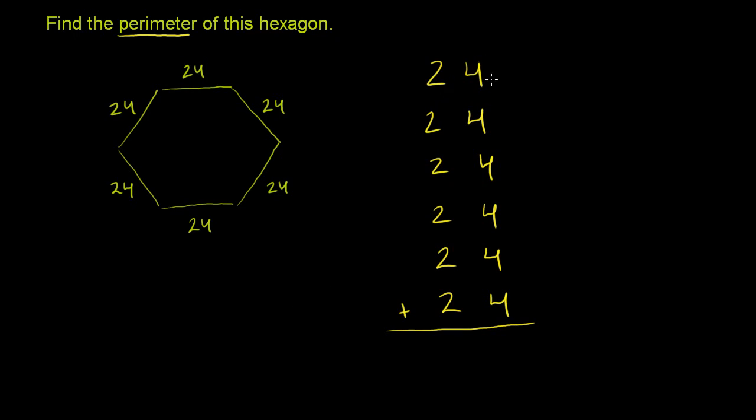So let's go first at the ones place. So 4 plus 4 is 8. 8 plus 4 is 12. 12 plus 4 is 16. 16 plus 4 is 20. 20 plus 4 is 24.